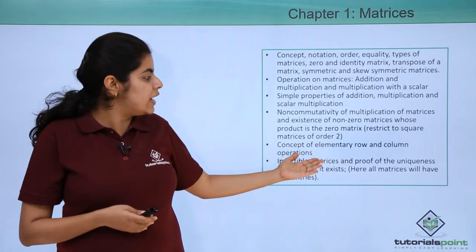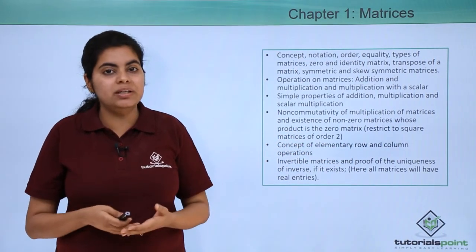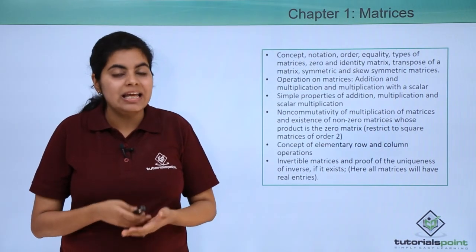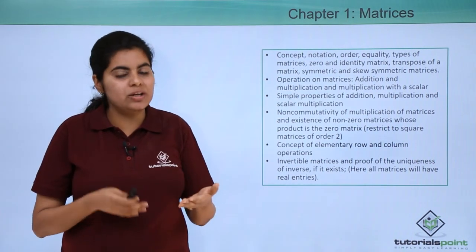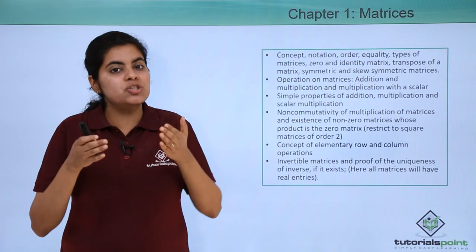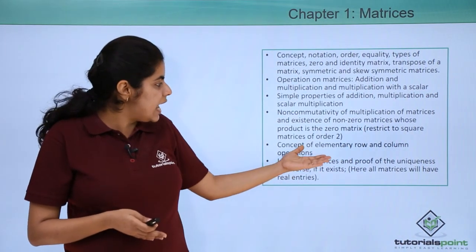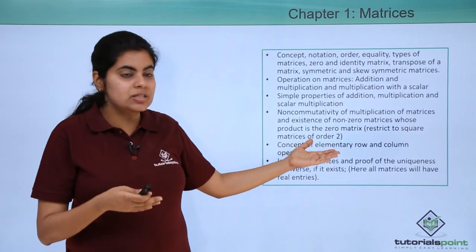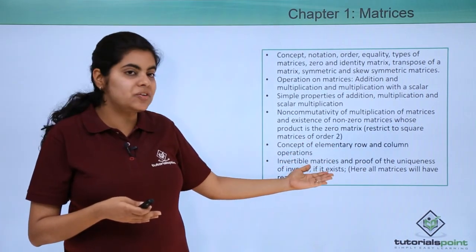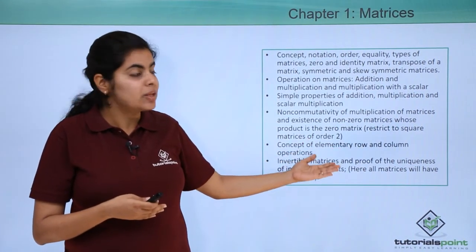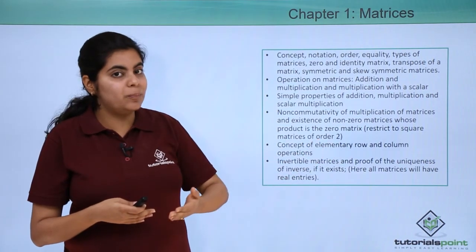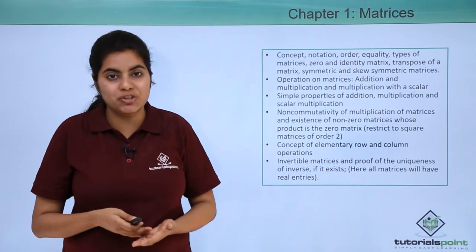Concept of elementary row and column operations is very important for your six markers. There are some operations called row and column operations. These are to be done, a lot of practice has to be done on this, because they will help us to solve the questions regarding invertible matrices also. So the row operations and column operations have to be done with a lot of practice.